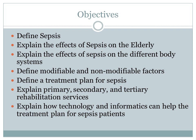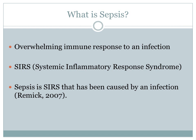In this presentation, I hope to accomplish the following: provide a clear definition of sepsis; explain the effects of sepsis on the elderly and its effects on the different body systems; define both modifiable and non-modifiable factors; define a treatment plan for sepsis; explain primary, secondary, and tertiary rehabilitation services; and explain how technology and informatics can help the treatment plan for sepsis.